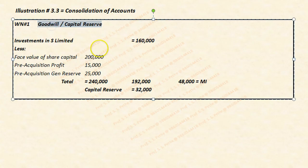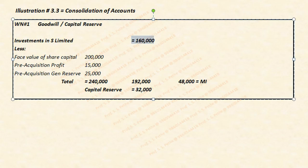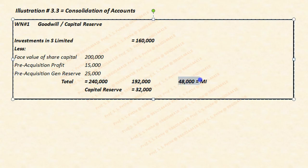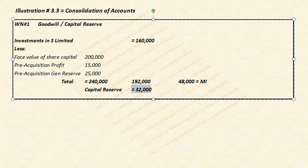After this, we have to prepare the goodwill and capital reserve statement. First, write the investment made by the holding in the subsidiary, the cost of which is 1 lakh 60,000. Then deduct the face value of share capital of subsidiary — 2 lakh — along with pre-acquisition profit and pre-acquisition general reserve. The total comes to 2 lakh 40,000, divided into 80% for the holding shares and 20% for minority shares. From the cost of investment, deduct the holding's share of 1 lakh 92,000, and you get 32,000 as the capital reserve.